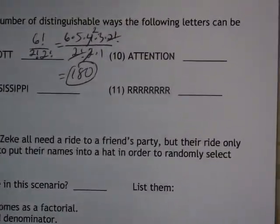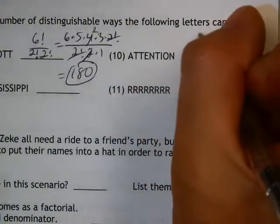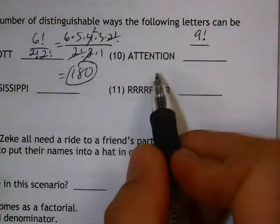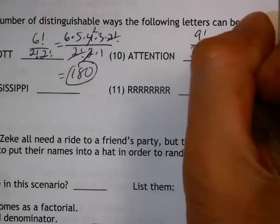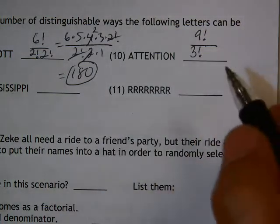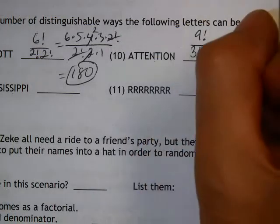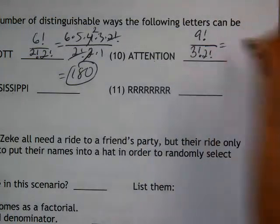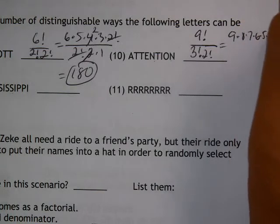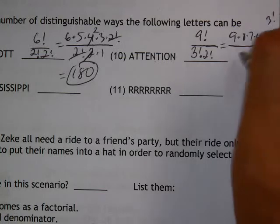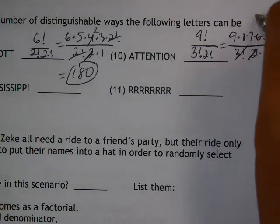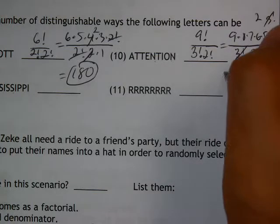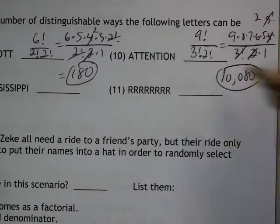Number ten, the last one. Same process. There are nine total letters in the word attention, so nine factorial on top. The T's repeat — there are three of those, so three factorial. The N's repeat — there are two N's, so two factorial. Expanding: nine times eight times seven times six times five times four, then three factorial cancels with the three factorial on the bottom. We're left with two times one for the N's, and the four can become two after canceling. Multiply all that out — you should get 10,080 for number ten.